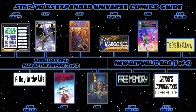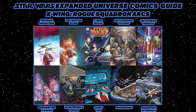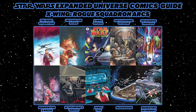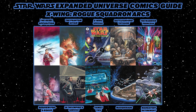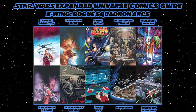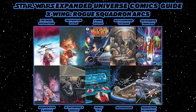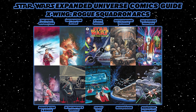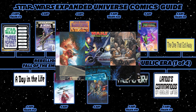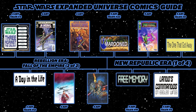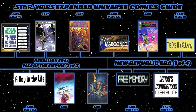The X-Wing Rogue Squadron series, which began in 1995, contains multiple arcs: issues 1-4 (The Rebel Opposition), issues 5-8 (The Phantom Affair), a Rogue Squadron special, issues 9-12 (Battleground Tatooine), issues 13-16 (The Warrior Princess), issues 17-20 (Requiem for a Rogue), issues 21-24 (In the Empire's Service), issues 26-27 (Family Ties), issues 28-31 (Masquerade), and issues 32-35 (Mandatory Retirement). Then the final part of Shadows of the Empire: Shadows of the Empire — Evolution, following the human replica droid Guri, Prince Xizor's personal assassin. Then finally end the Rebellion era with the Jabba the Hutt one-shot.